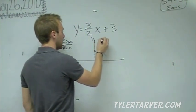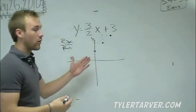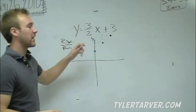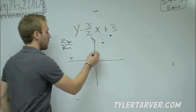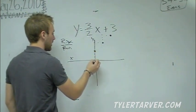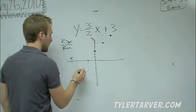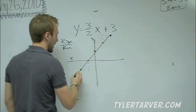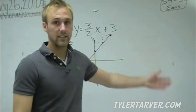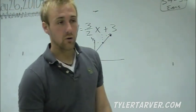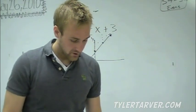The slope is rise over run. We rise 3 — one, two, three — then run 2 — one, two — and make a point. Rise 3, run 2, make another point. You can also go the other direction: negative 3 over negative 2 is still positive, so go down 3 and back 2. Connect those points and you're done.